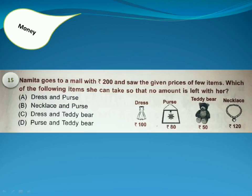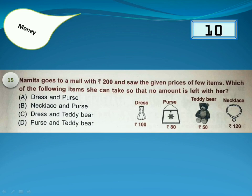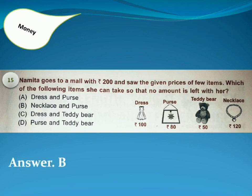Namita goes to a mall with 200 rupees and saw the given prices of a few items. Which of the following items can she take so that no amount is left with her? Answer is Option B, because the cost of the purse and necklace is exactly 200 rupees, so no amount is left with her.